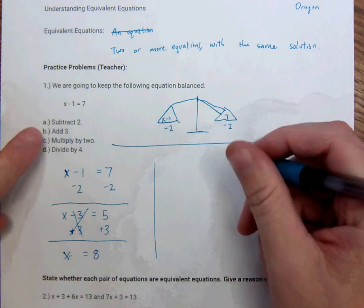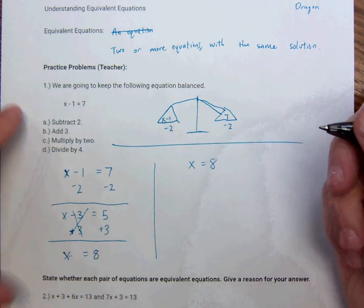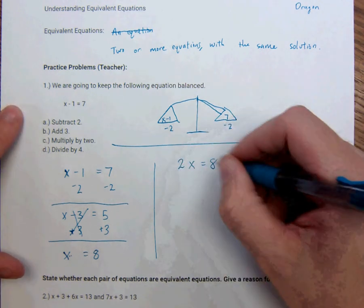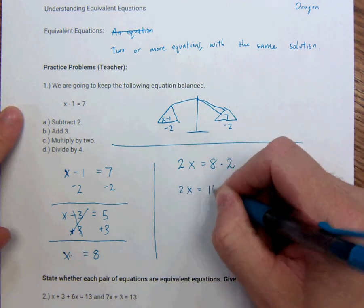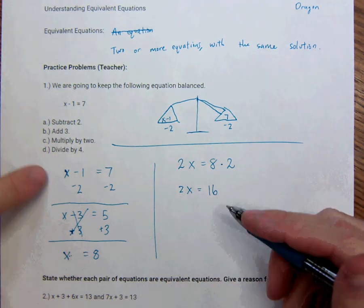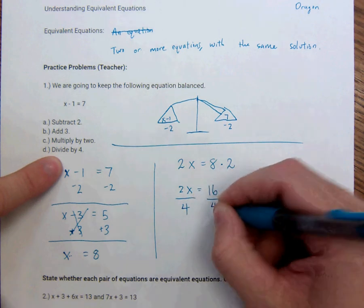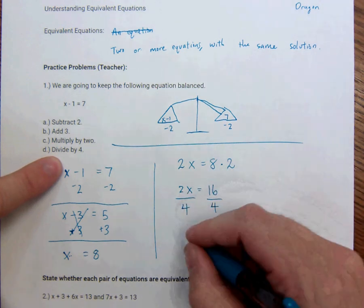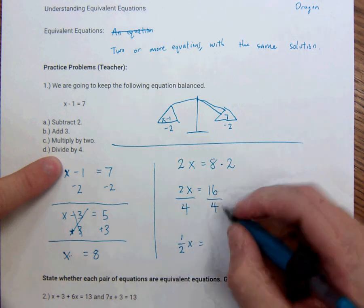And we want to keep that going. So I'm going to take the x equal to 8, and now I'm going to multiply by 2. So I'm going to multiply by 2 here. I'm going to multiply by 2 here. This becomes 2x equal to 16. 2 times 8 is 16. So we're still equal. I'm going to divide by 4. So I'm going to divide by 4 here. Divide by 4 here. 2 fourths is the same thing as 1 half. So 1 half x. 16 divided by 4 is 4.